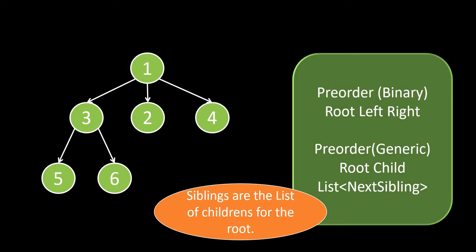We already know how to find the pre-order traversal for a binary tree which has at most 2 children. In that case, we write the pre-order as root, left, and right. Over here, we have a list of children at a particular level, so our pre-order traversal would change to root, then the child, and then the sibling of that child. The siblings are the list of children for that particular root node.